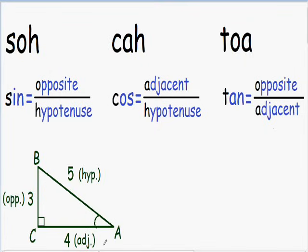After we label all the sides of the triangle, it's really easy to find the values for all the trig functions for angle A. First I'm going to start with the sine of A. The sine is equal to the opposite over the hypotenuse. Since our opposite is 3 and our hypotenuse is 5, the sine of A is equal to 3 over 5.